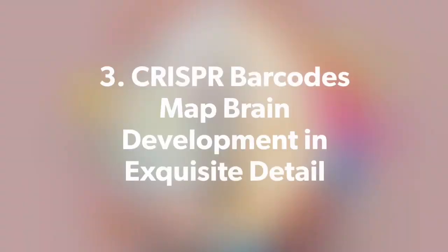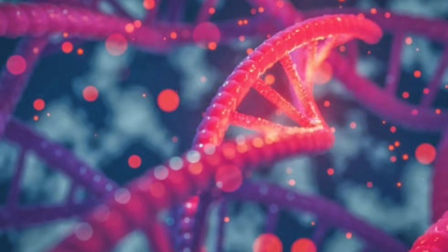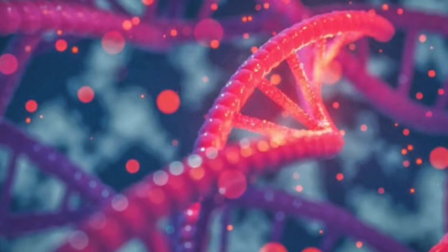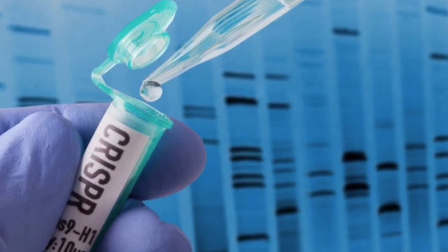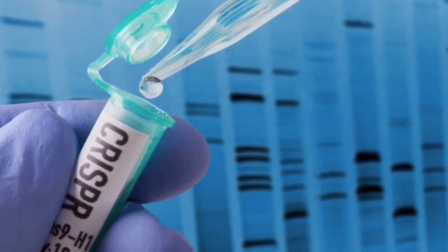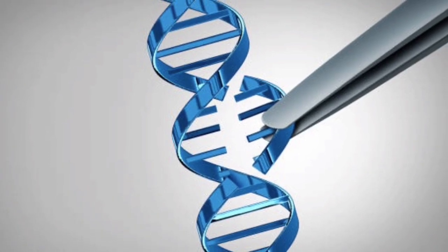CRISPR barcodes map brain development in exquisite detail. The developing mammalian brain consists of an intricately choreographed dance of newborn neurons, with each adopting its specific identity and migrating to its home base in the brain. Scientists have long hoped to examine the process in detail, which could help uncover secrets of brain development and how it goes wrong.